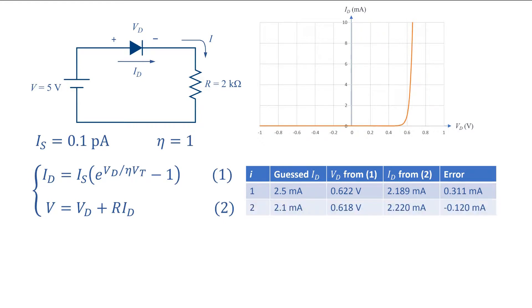As a second guess, I use 2.1 mA and do the calculations the same way. The calculated current is 2.22 mA which is larger than my guess and because of that we have a negative error.